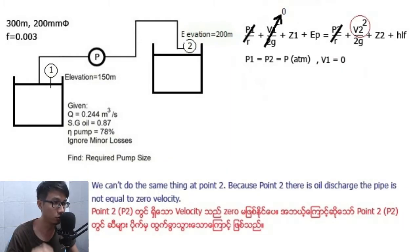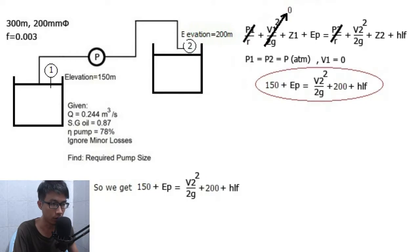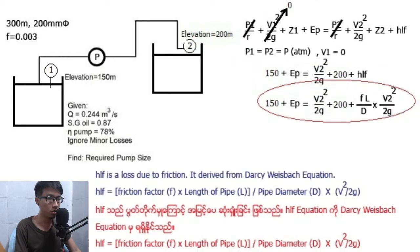We cannot do the same thing at Point 2 because Point 2 is where water just exits the pipe, so it's not zero velocity. Looking at the equation, Z1 represents the elevation of Point 1. So Z1 is equal to 150 meters. So we get 150 plus Ep equals V2 squared over 2g plus Z2 equals 200 meters plus HLF. HLF is the loss due to friction.